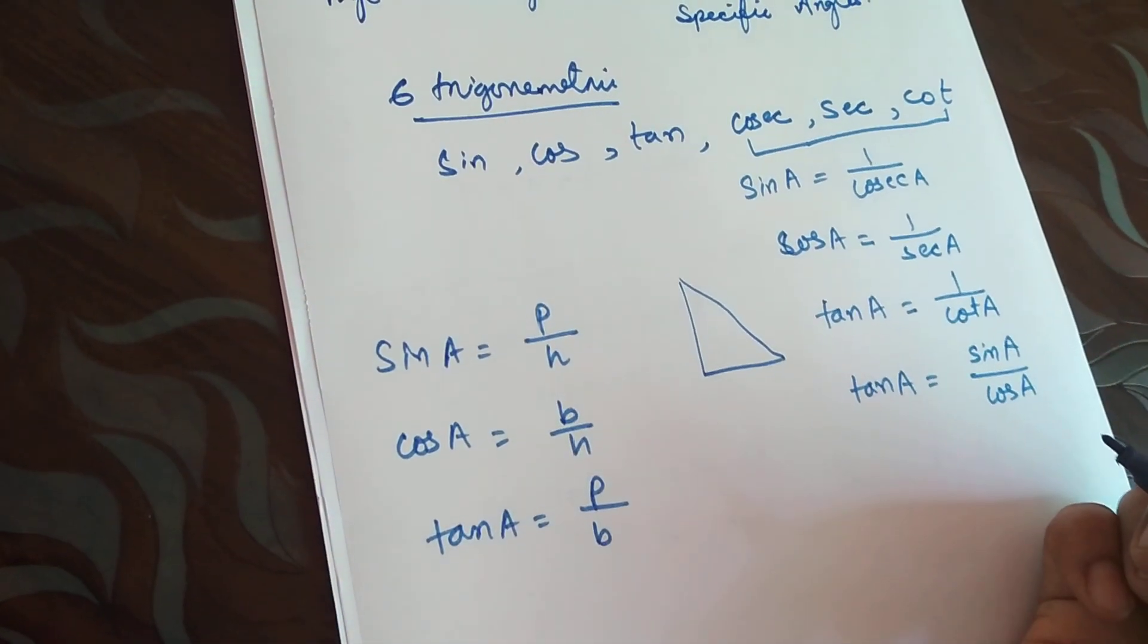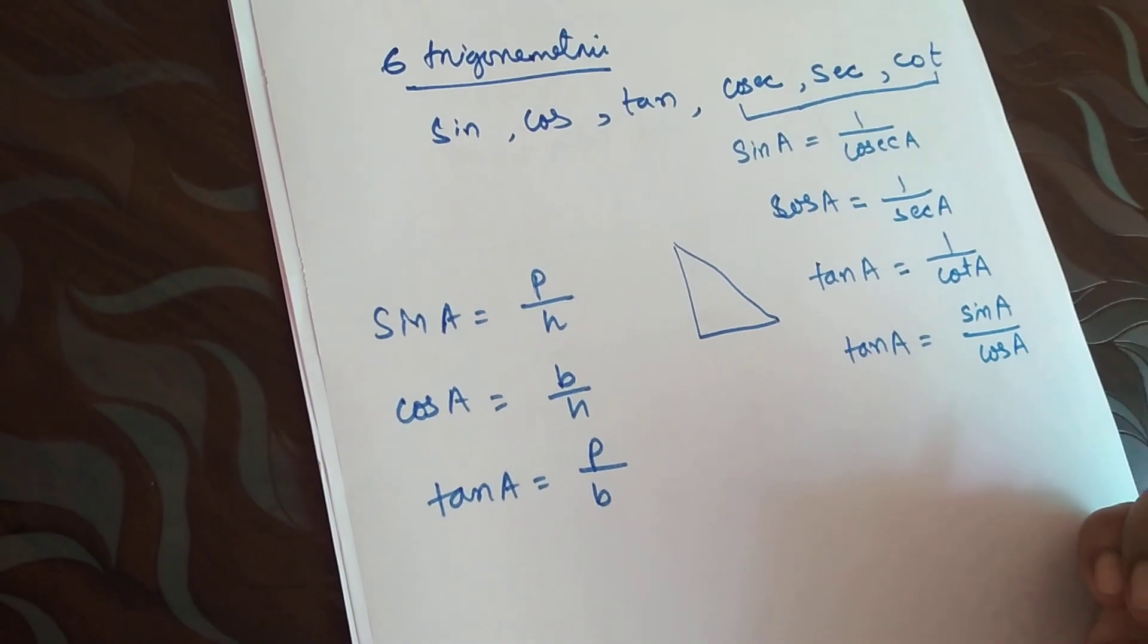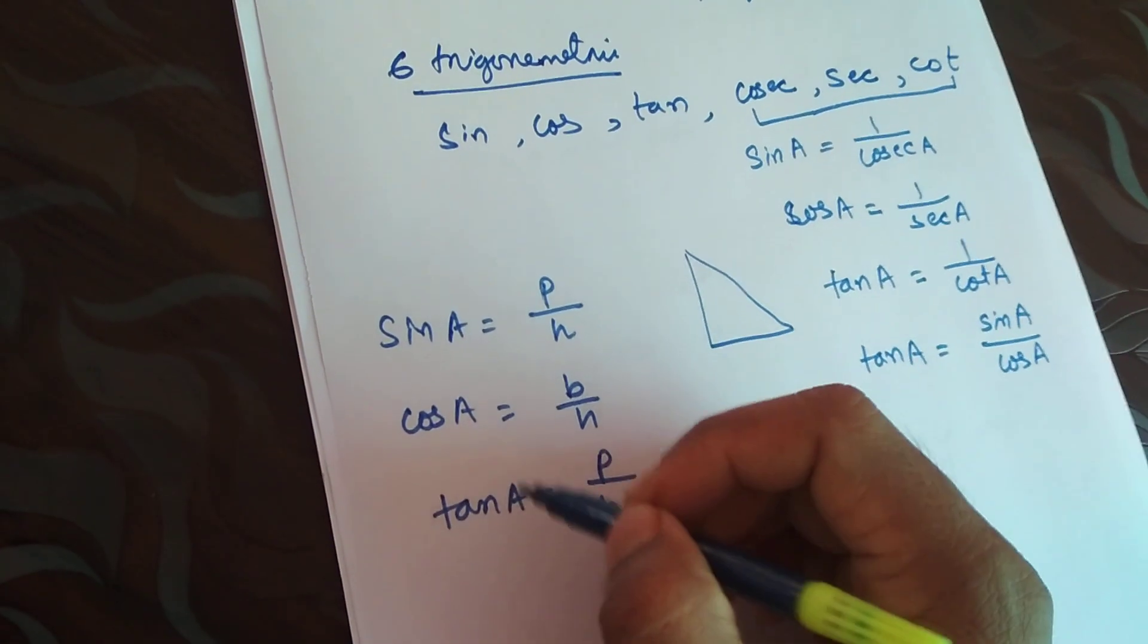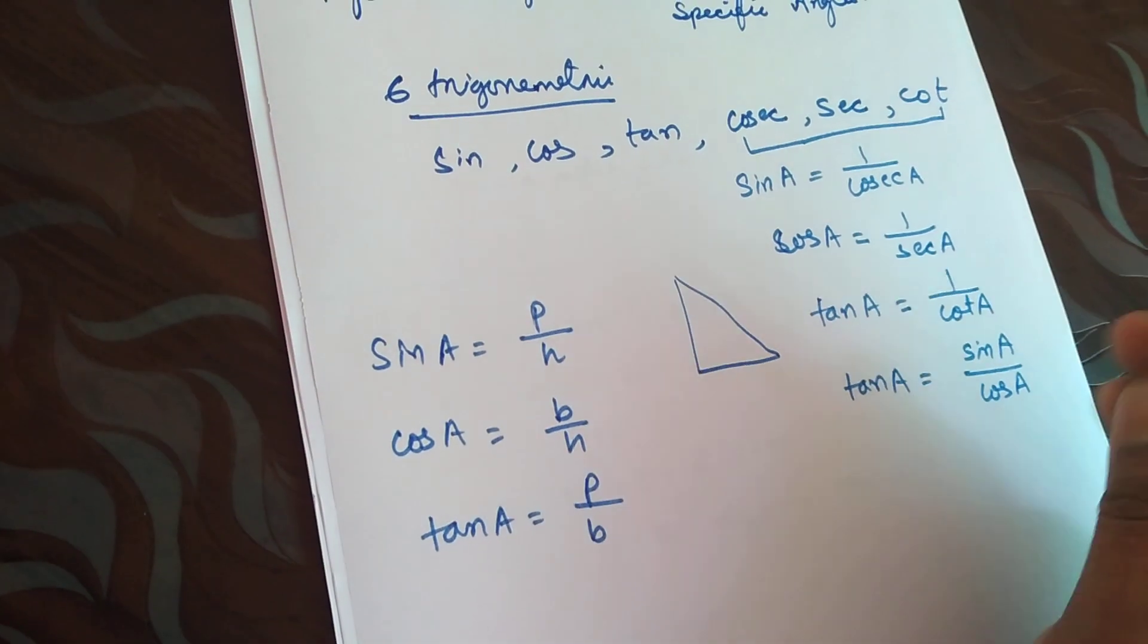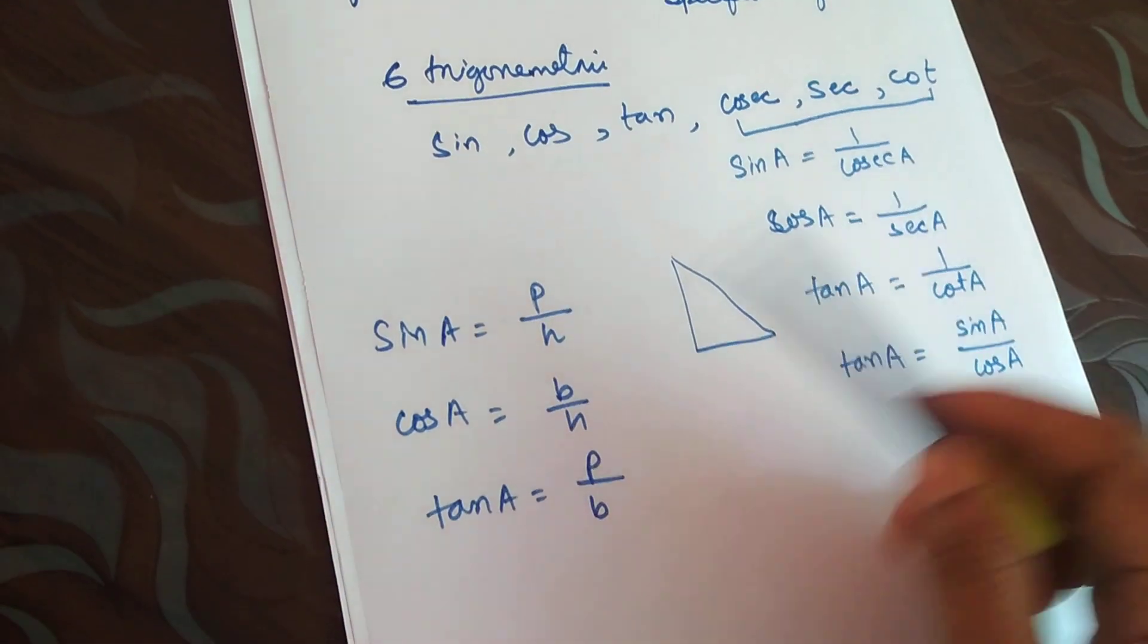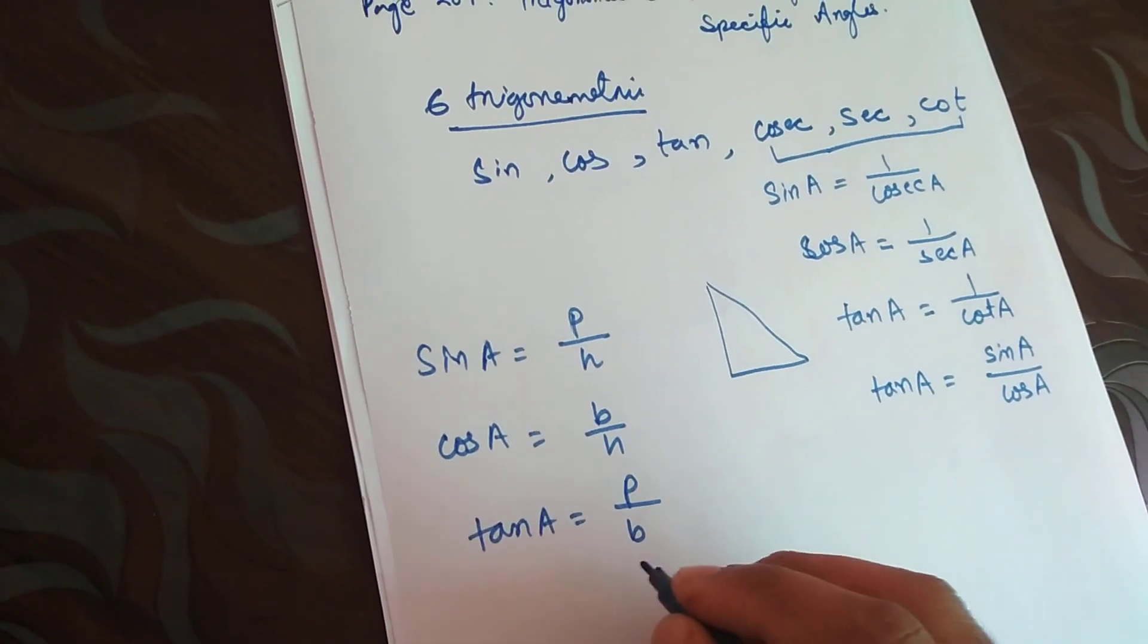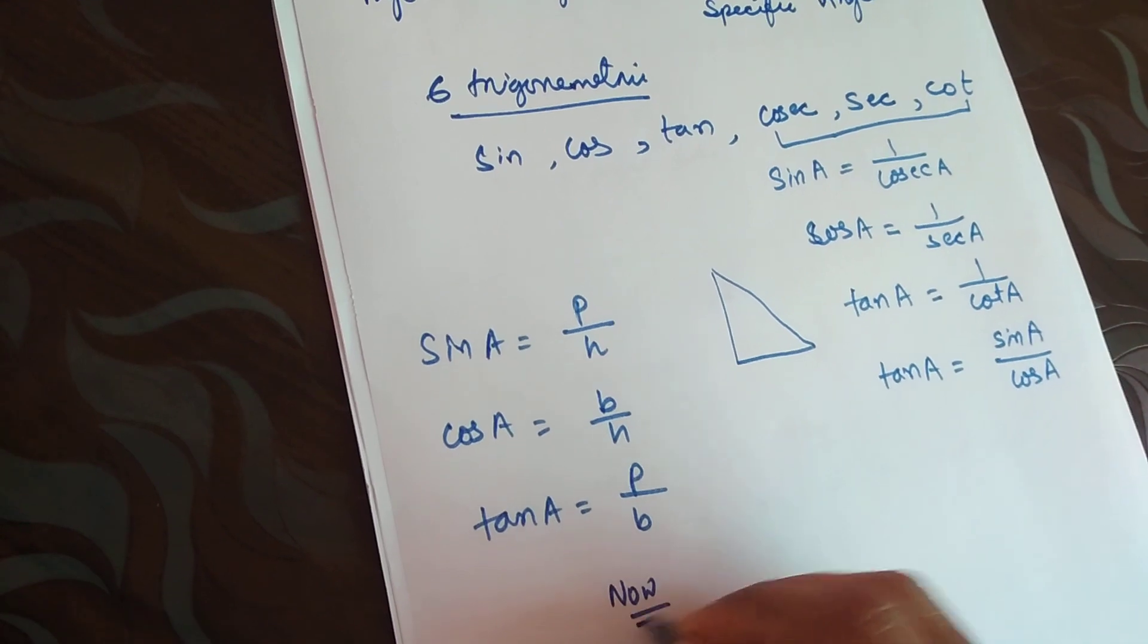This is the basic criteria for trigonometric ratios. Once we got sine, cos, and tan, we can easily find out what is cosec, sec, and cot because they are just the reciprocal terms.